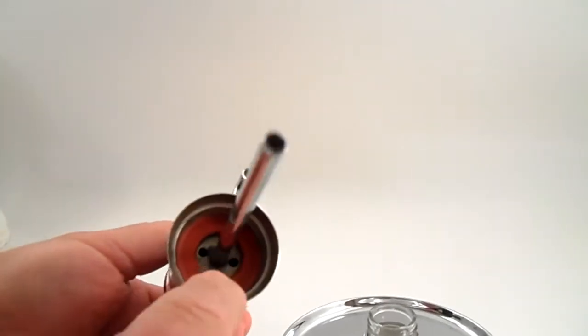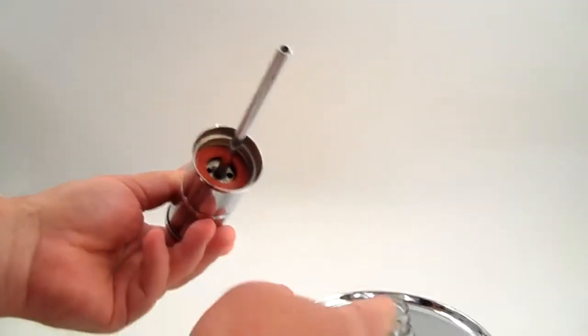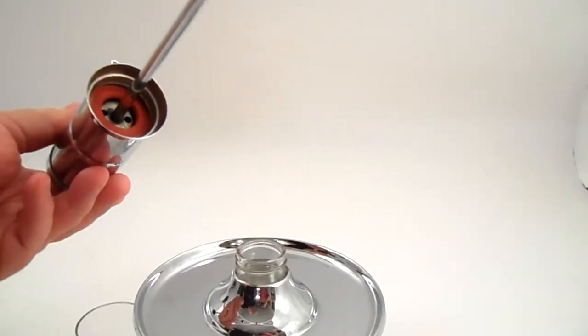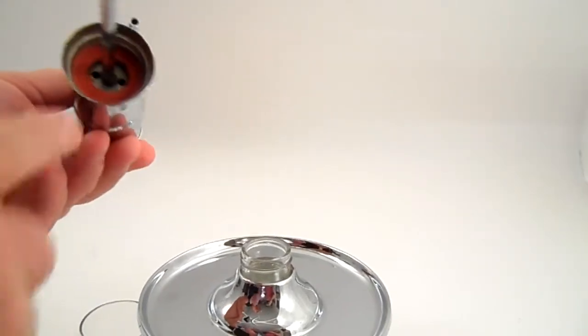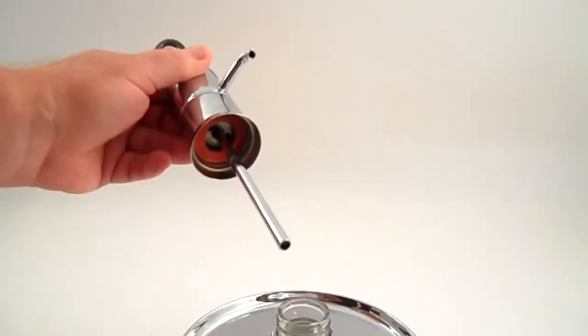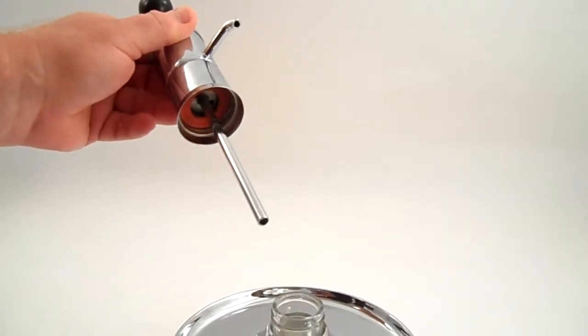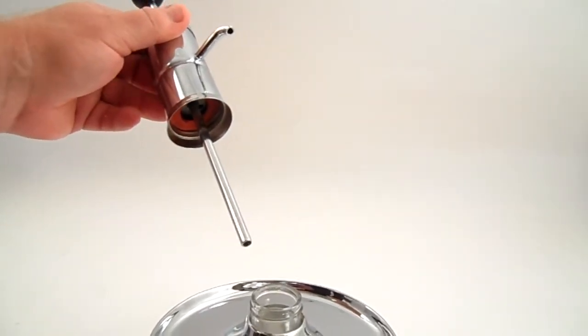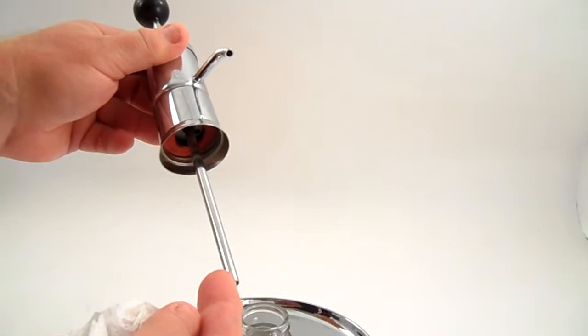It works like a bicycle pump. There's a gasket down here that has to fit securely because it pushes air out that hole. Then the air goes into the jar or container and pushes the liquid back up through and out the spout.